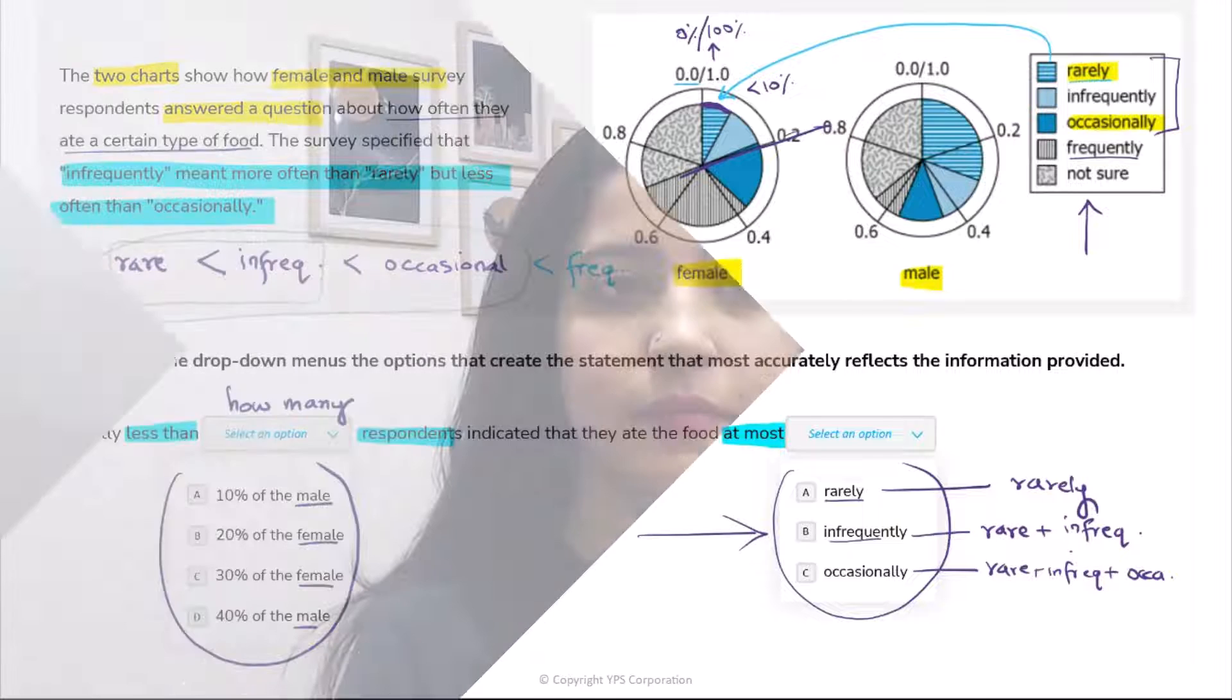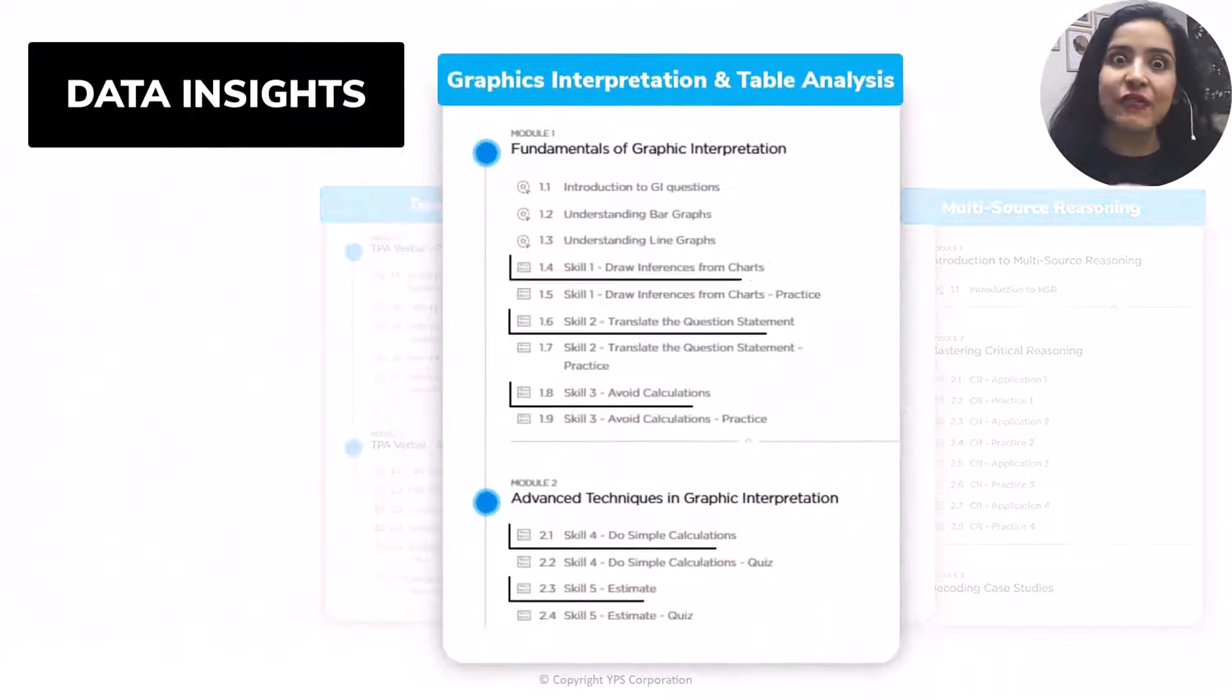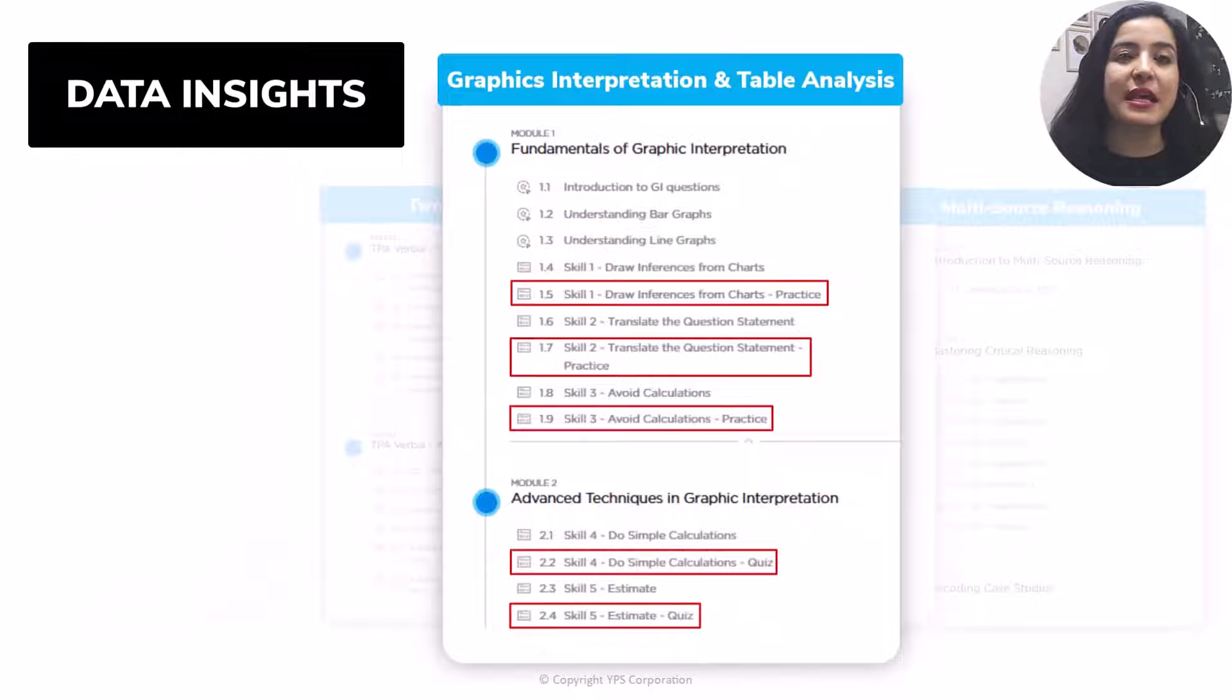At this point, let me ask you this: could you have arrived at the approach of solving this question with this level of clarity had you not spent the effort in thoroughly understanding the information presented? Such is the power of the process of owning the data set. And because this skill may not come naturally to many of you, we have created a course architecture that ensures that we teach you this skill through every guided quiz in the e-GMAT DI course, and we reinforce the same in every practice quiz.